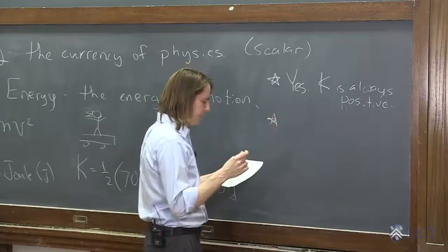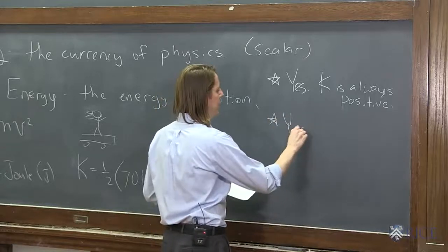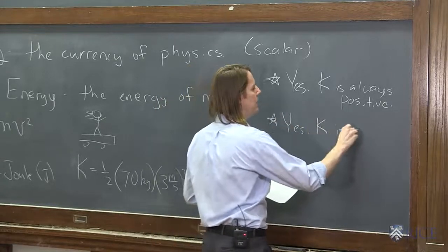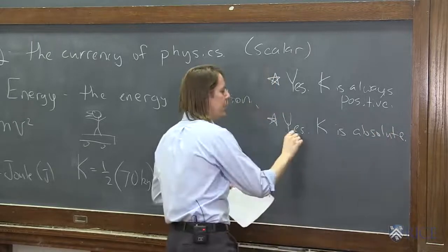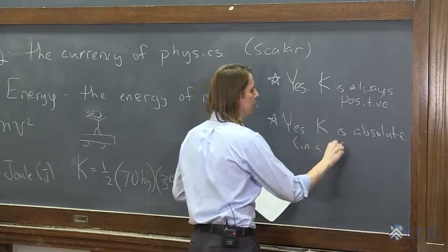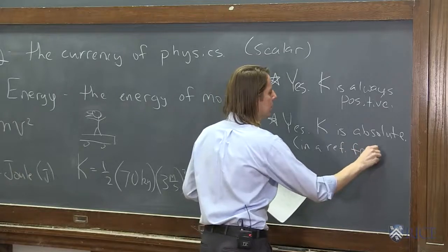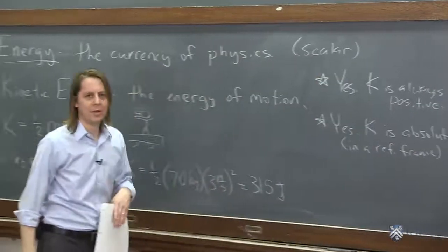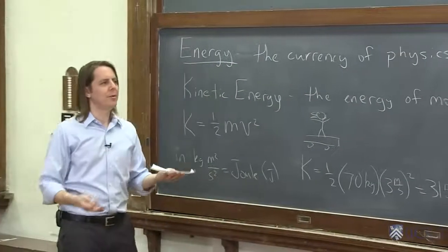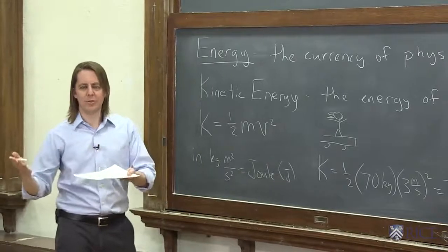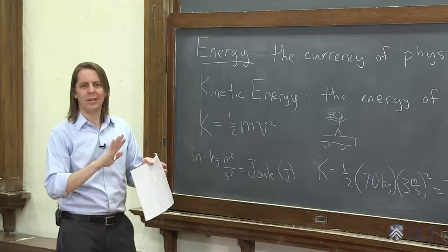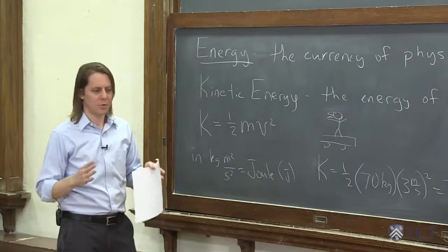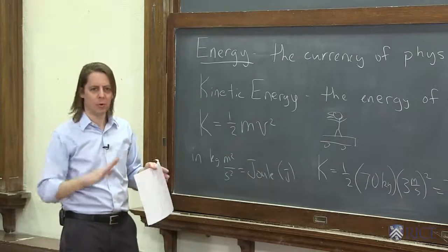Yes, K is absolute in a reference frame. We'll clarify that in a minute. But you'll see things like potential energy, other kind of energies are coming later, or position on an axis, depends on where you put zero. None of that is the case for kinetic energy. You have a certain amount, no matter where you put the origin.